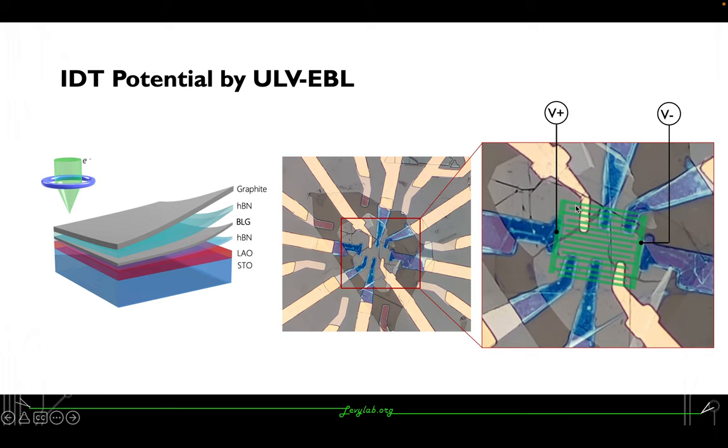We can have topologically protected channels, edge channels in the bilayer graphene, and we're hoping to see interesting results from it.